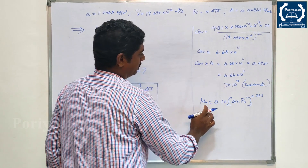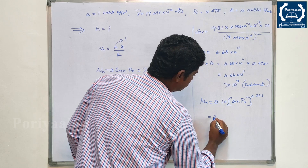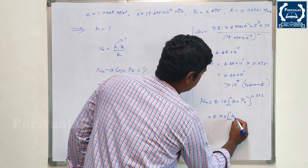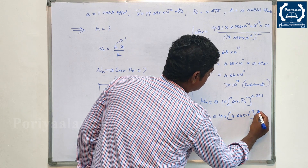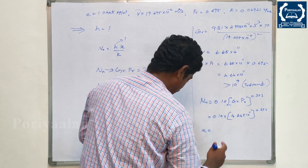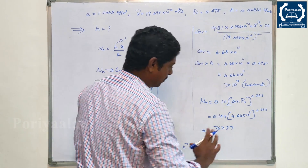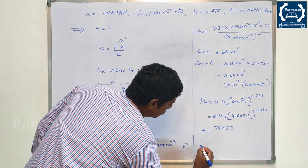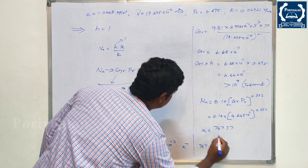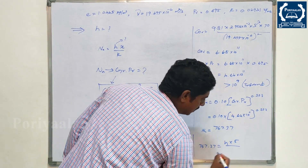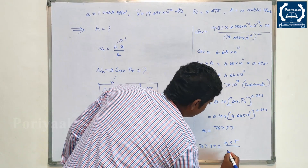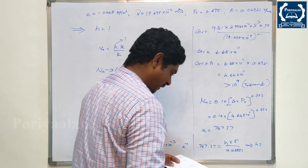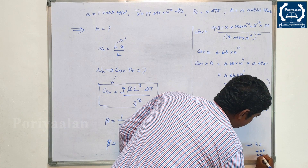Substituting: Nu equals 0.10 × (4.64 × 10¹¹)^0.333. Solving: Nu equals 767.37. Then h equals Nu × k divided by L, giving h equals 4.49 W/m². That is the answer.